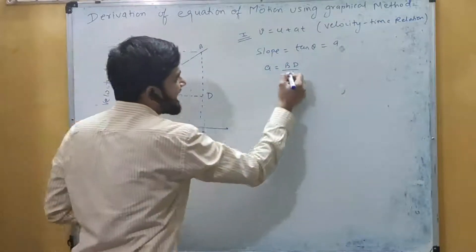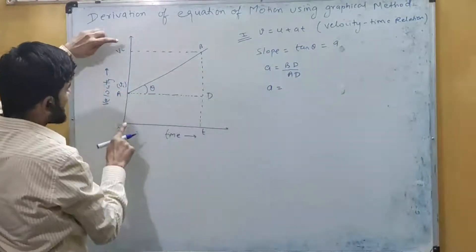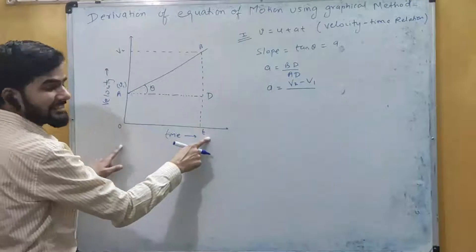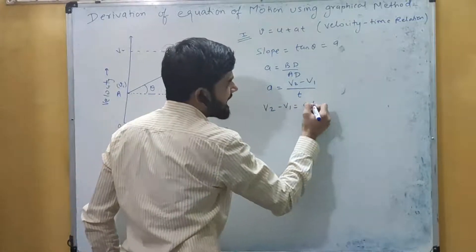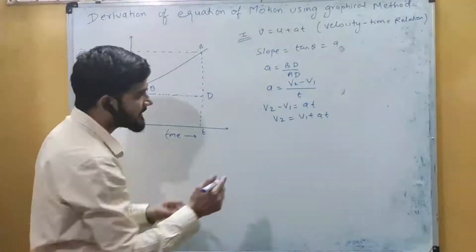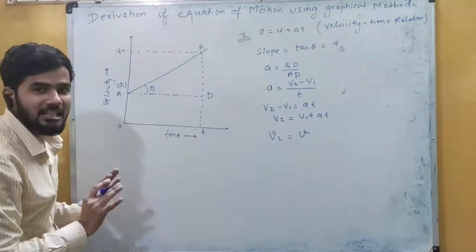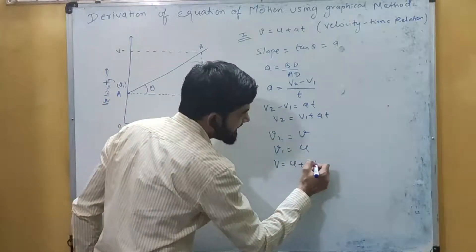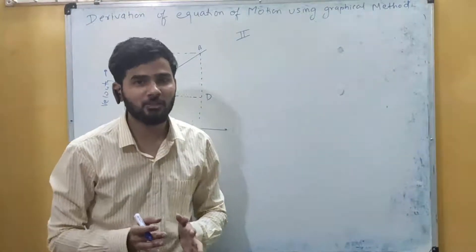So acceleration a equals BD/AD, where BD equals v₂ − v₁ and AD equals time t. This gives v₂ − v₁ = at, or v₂ = v₁ + at. Since v₂ is the final velocity (represented by v) and v₁ is the initial velocity (represented by u), we get v = u + at. This is the first equation of motion derived graphically.